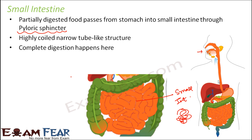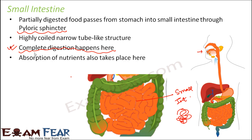Complete digestion happens here and that is why it is a very important part of the digestive system. Not only digestion but also absorption of nutrients takes place here. First it will completely digest the food, converting it into the simplest form. And those simplest forms are absorbable by the body, so the absorption of nutrients from the food will also take place in the small intestine.